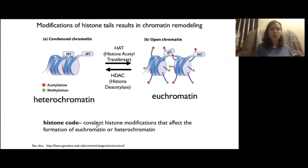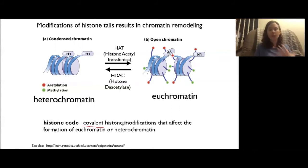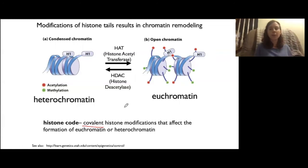Just a quick note: all of these chemical groups that are added to histones are added covalently. So these aren't ionic or hydrogen bonds — these are covalent bonds.